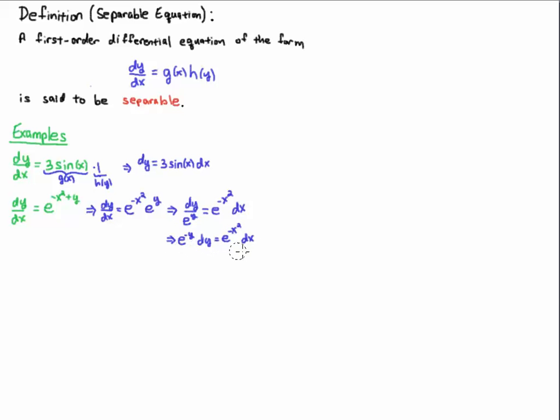No matter what, this turns out to be not only helpful in terms of understanding the definition, but also helpful in terms of being able to solve the problem. Because you have e to the minus y dy equals e to the minus x squared dx.